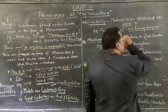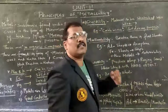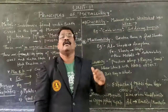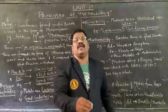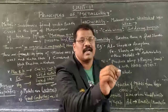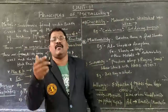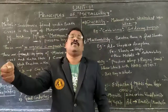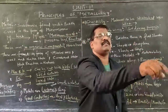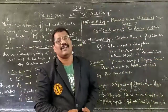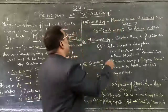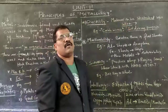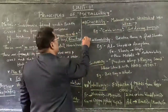For soldering purposes also, this ductility property of metals is used. For example, in a TV, if any small circuit has been short-circuited, using a soldering gun we can remove the damaged chip and place another chip by soldering. Therefore, metals have the property of ductility — they can be drawn into wire form.